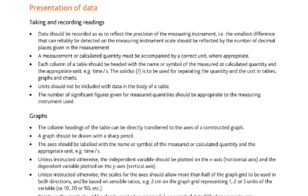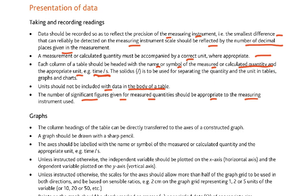Data should be recorded so as to reflect the precision of the measuring instrument — that is the smallest difference that can reliably be detected. The scale should be reflected by the number of decimal places given in the measurement. A measurement or calculated quantity must be accompanied by a correct unit where appropriate. Each column of a table should be headed with the name or symbol of the measured or calculated quantity and the appropriate unit — for example, time should be given in seconds. The solidus line is used for separating the quantity and the unit in tables, graphs and charts. Units should not be included with the data in the body of the table.